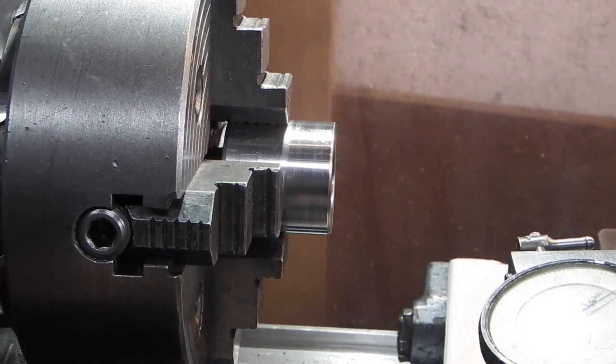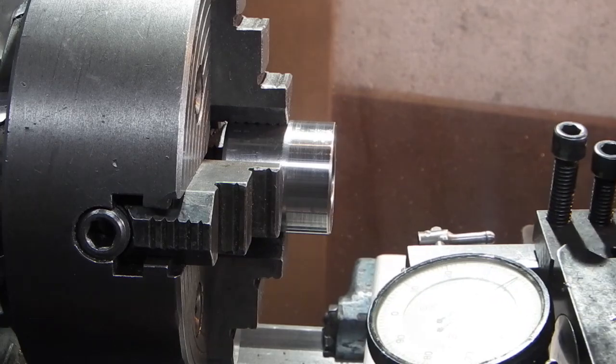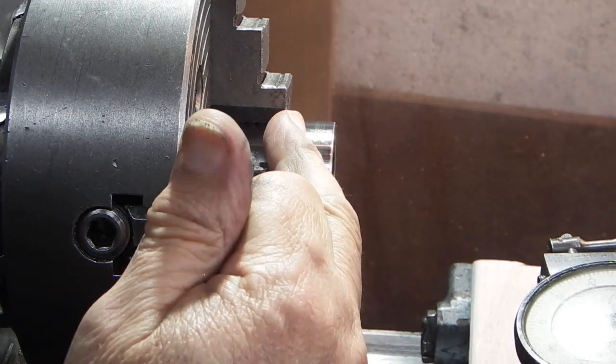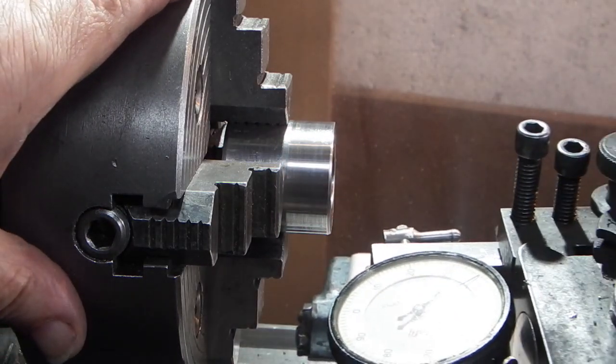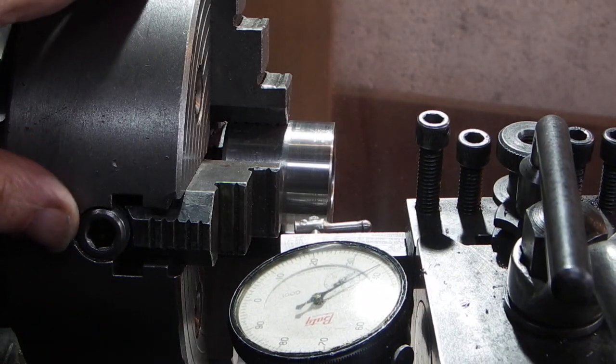I'll just put the part central in the four jaw chuck and I've just put some emery over here to take off any chuck marks. Let's check that it's running true.